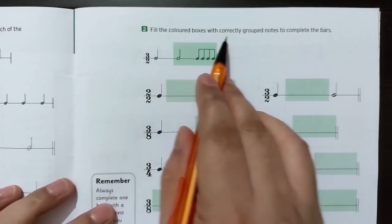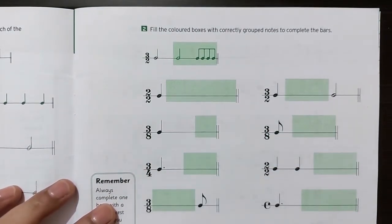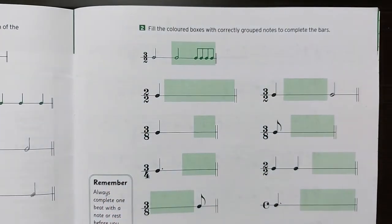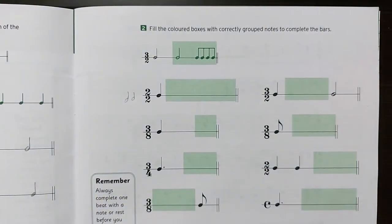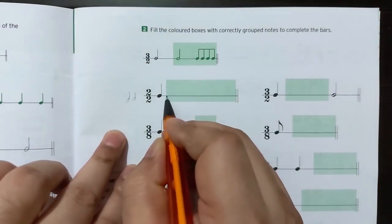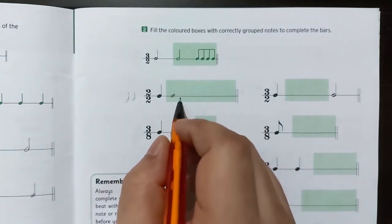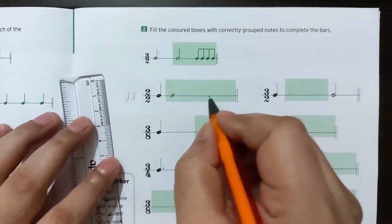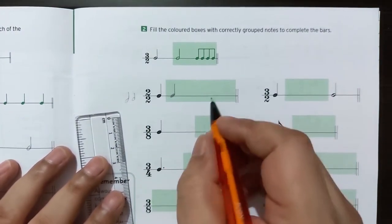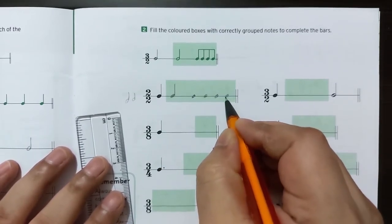Now on the next page, we have to fill the colored boxes with correctly grouped notes to complete the bars. Let's start: this is two by two, so we should have two minim beats in one bar. They have given us one crotchet beat, so first we complete the value of that — we add one crotchet beat to finish the first minim value. Then we can make the second group with quaver beats beamed together.